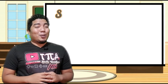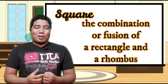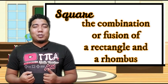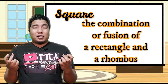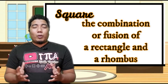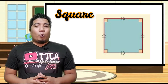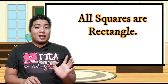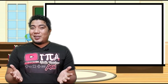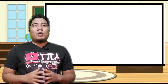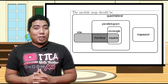Now let's talk about the square. Basically, a square is the fusion or combination of rectangle and rhombus. When all the properties of rectangle and rhombus are combined together, you get a square. To make the long story short, all squares are rectangles and all squares are rhombi.